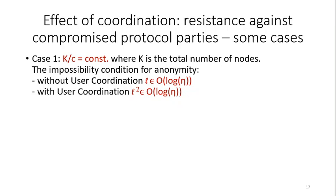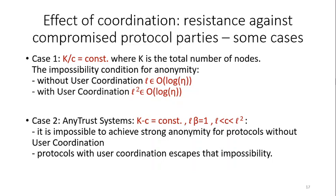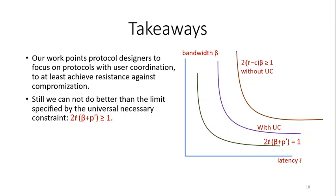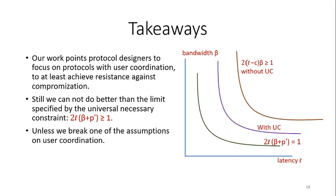In another example, for any-trust systems where only a constant number of nodes are honest and most nodes are dishonest, strong anonymity is impossible without user coordination for most scenarios. However, protocols with user coordination in most cases escape that impossibility. The takeaways from our paper: our work points protocol designers to focus on protocols with user coordination, at least to achieve resistance against compromising. Still, we cannot do better than the limit specified by the universal necessary constraint, which is 2 times latency times message rate greater than or equal to 1, unless we can break one of the stated assumptions on user coordination.